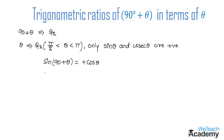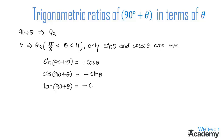For cos(90° + θ): in the second quadrant, cos is negative, and cos changes to sine, so we get minus sine θ. Similarly, tan(90° + θ) equals minus cot θ.